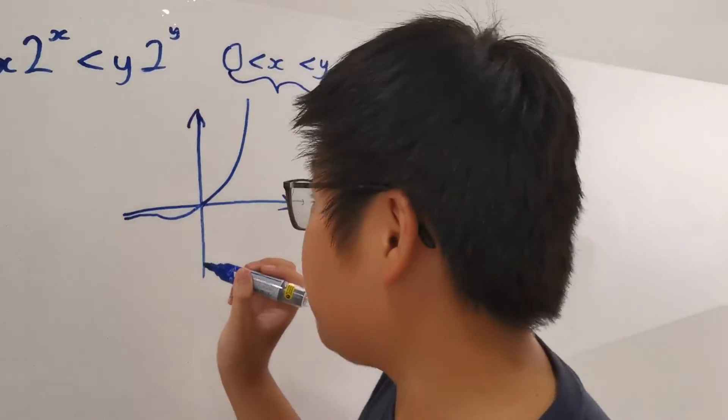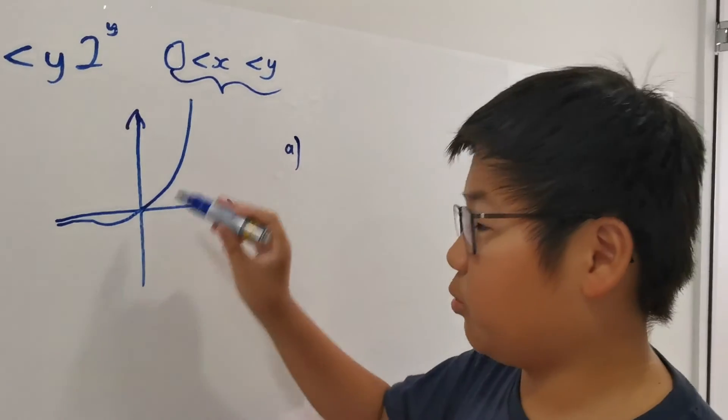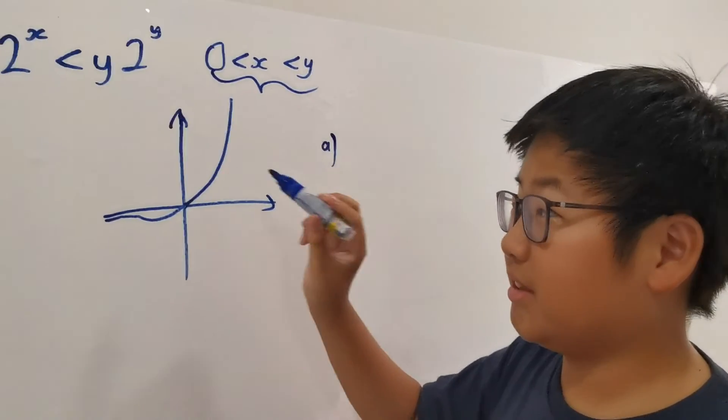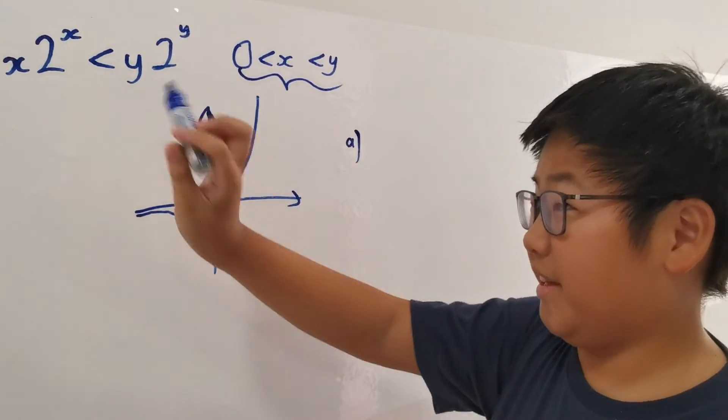But, when we take into account the positive space, we see that this is a one-to-one function. And one-to-one functions don't satisfy this rule.